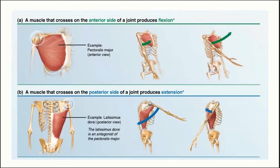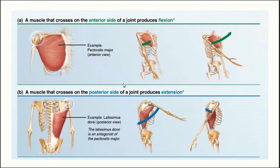Which side of a joint a muscle crosses determines the type of movement it creates. If the muscle crosses the anterior side of a joint, it will typically produce flexion. If it crosses the posterior side, it will typically produce extension. Two exceptions are the knee and ankle joints, where muscles crossing the anterior side produce extension and those crossing the posterior side produce flexion.